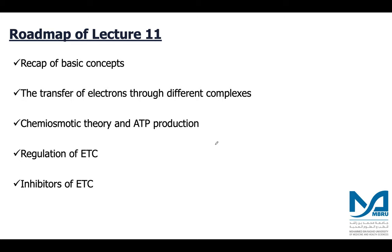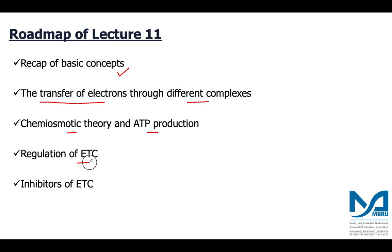What we are going to do in this lecture is to recap some basic concepts regarding mitochondria, then look at the transfer of electrons through different complexes present in the mitochondrial inner membrane. We will talk about the chemiosmotic theory and ATP production, then the regulation of the electron transport chain, and lastly inhibitors of the electron transport chain which are of pharmacological and toxicological importance.